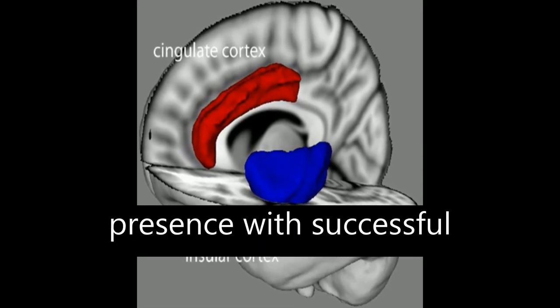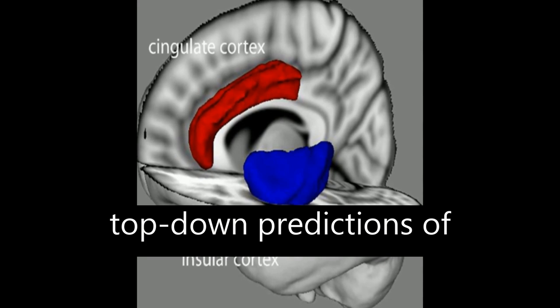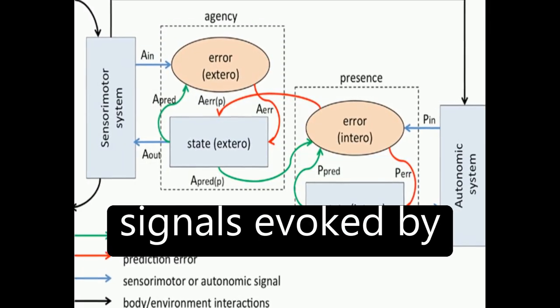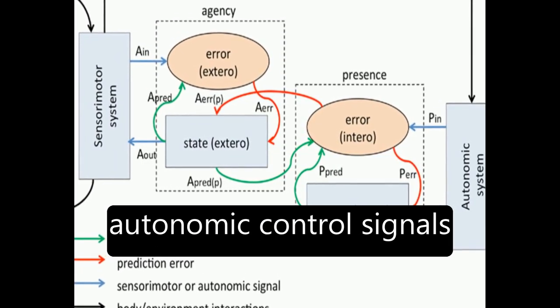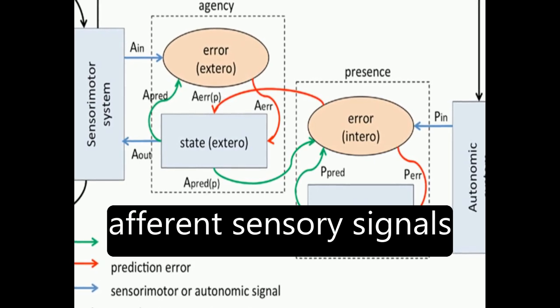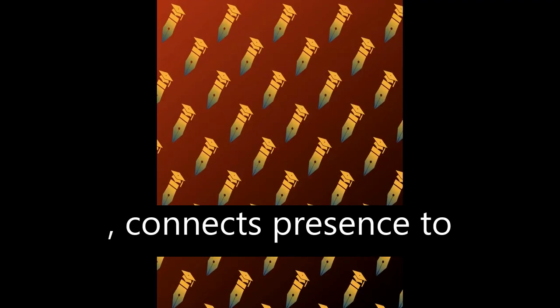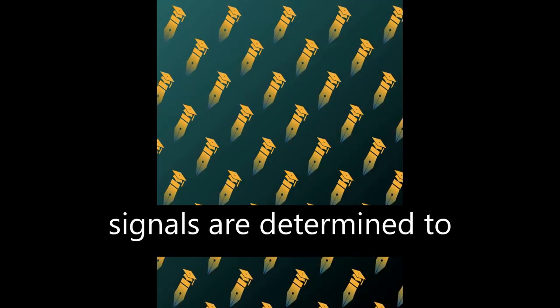The model associates presence with successful top-down predictions of informative interoceptive signals evoked by autonomic control signals and visceral responses to afferent sensory signals, connects presence to agency by allowing that predicted interoceptive signals will depend on whether afferent sensory signals are determined to be self-generated or externally caused.